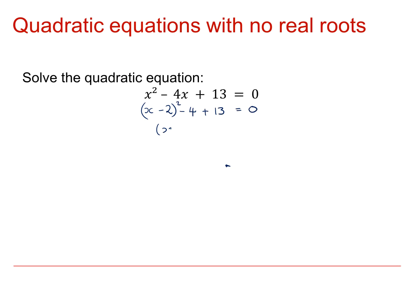When we rearrange this, we get x minus 2 all squared is equal to minus 9. So we get a problem when we try to square root. x minus 2 is equal to plus or minus the square root of minus 9.